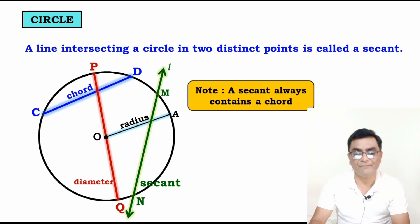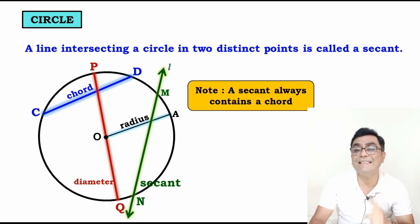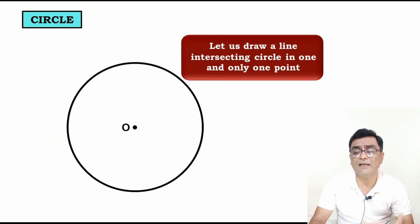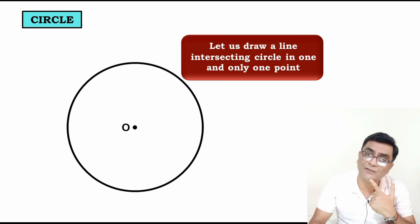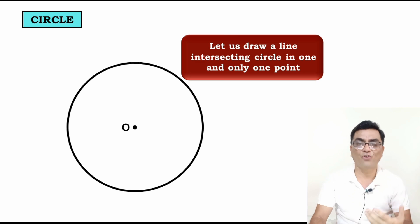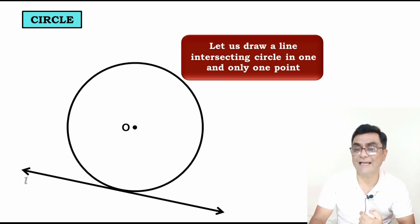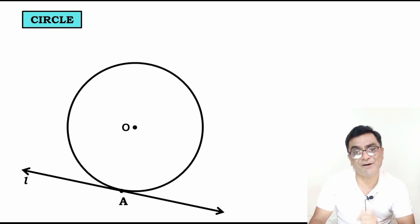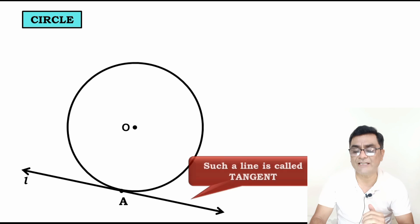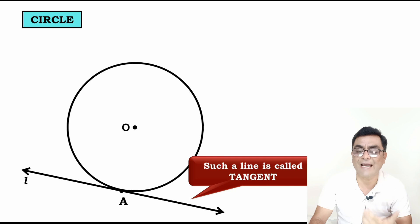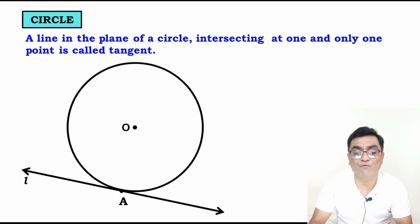A line intersecting a circle in two distinct points is called a secant. Now let us draw a line intersecting a circle in one and only one point. Line L is touching the circle at point A only — it just touches the circle. Such a line is called a tangent.